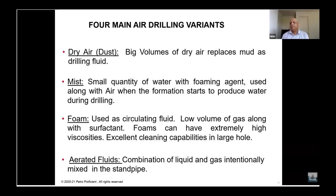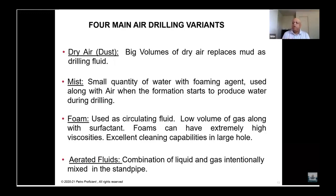Mist drilling occurs when small quantities of water are produced by the formation while you are drilling. A small quantity of water is added along with a foaming agent to the air to mitigate the produced water and ensure it is lifted. When you start drilling under-balance and pass through water-producing zones, that water needs to be displaced out of the well. This is done by adding foaming agent and water to your air — this technique is called mist drilling.